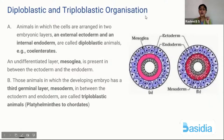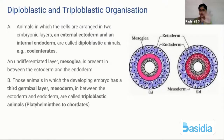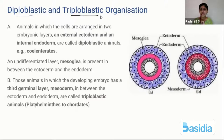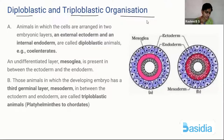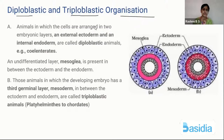One more important criteria for classification: diploblastic and triploblastic organization. Have you ever heard the word blastocyst? When you study about layers of cells in the embryo, you hear this word. In animals, cells are arranged in the form of embryonic layers.